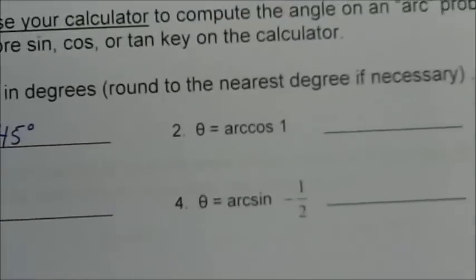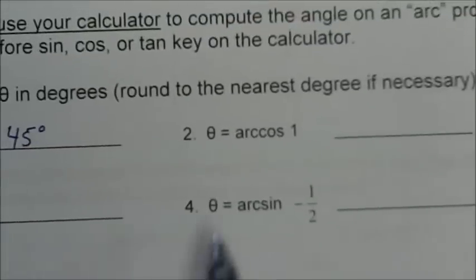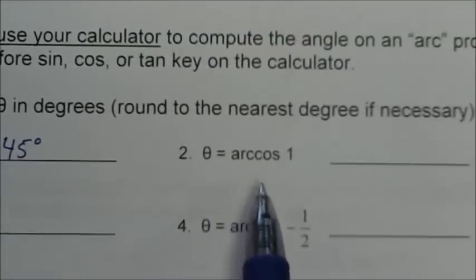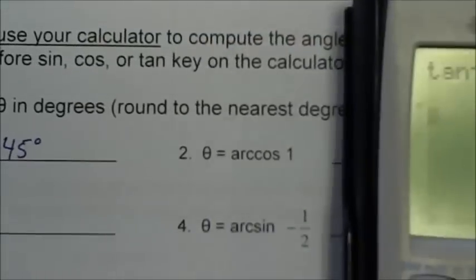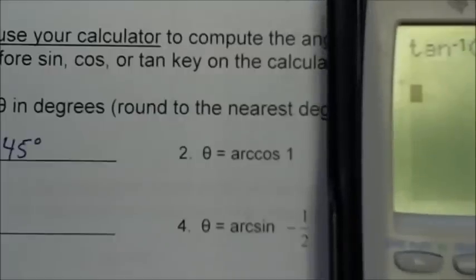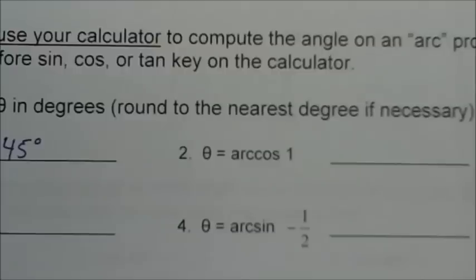Number 2: theta equals arc cosine of 1. What angle has a cosine value of 1? 2nd, cos, 1 — 0 degrees.